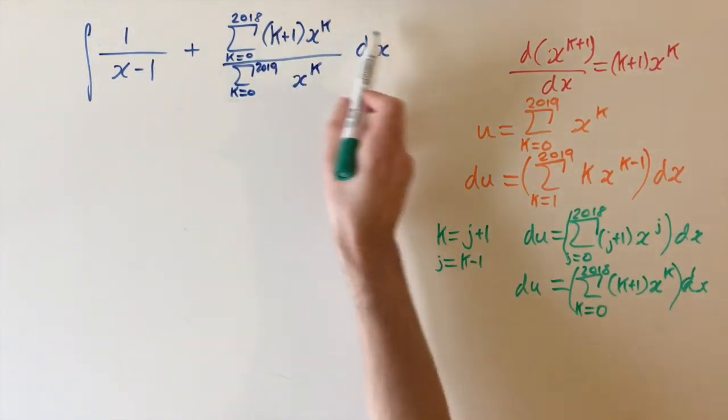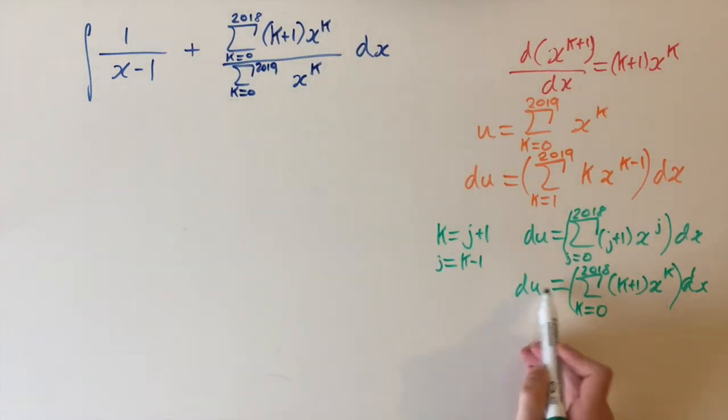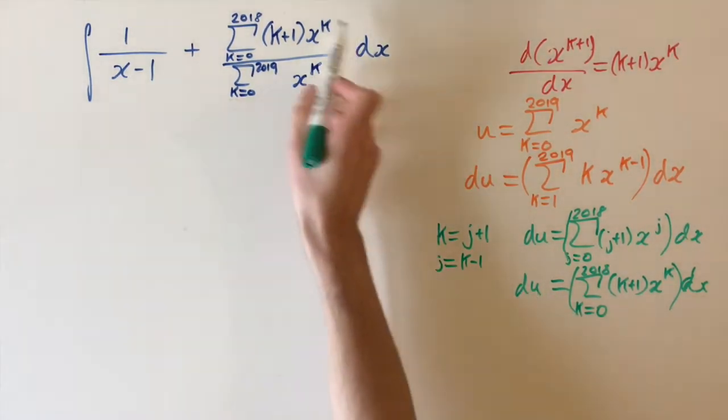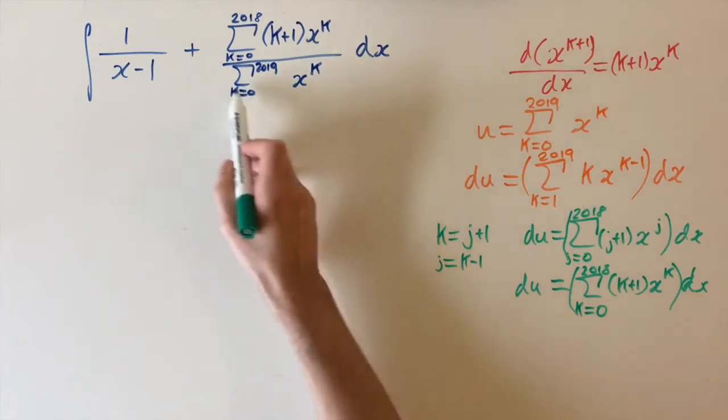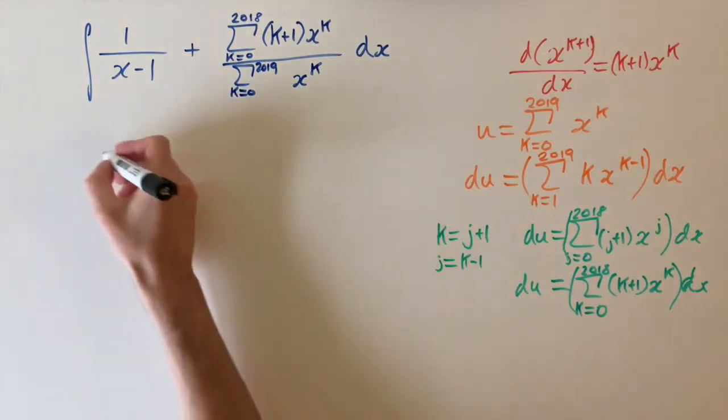And then this is really useful because we can substitute dx times the series, which is just the numerator of this integral, by du. So this simplifies very nicely because the numerator turns into du and the denominator turns into u. So now we can evaluate this integral.